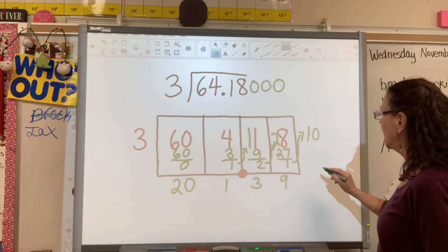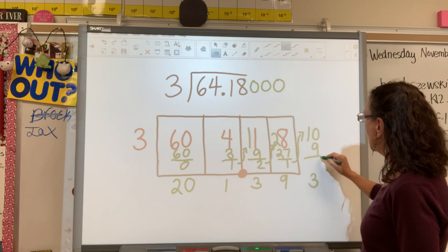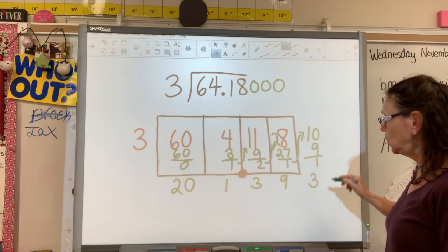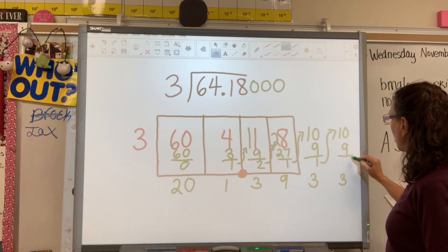So how many times does three go into 10? It goes in three times. Three times three is nine. And we get one.